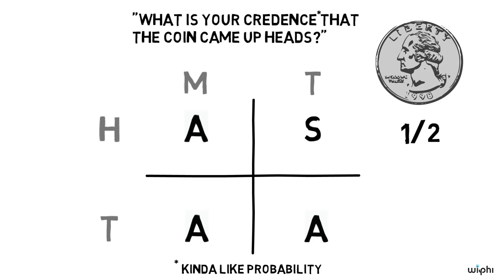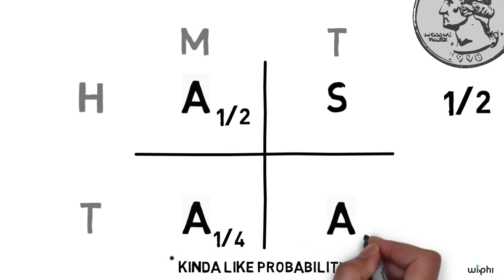It's a rule of probability theory that probabilities have to add up to one. So we can write one half in the Monday heads box, and given that the coin had a one half chance of coming up tails too, we can divide that one half by two, splitting the probability evenly between the two scenarios. Problem solved!